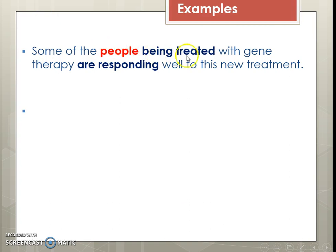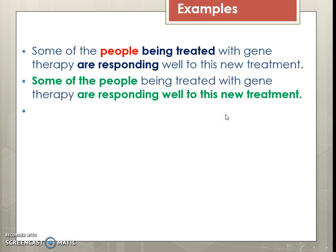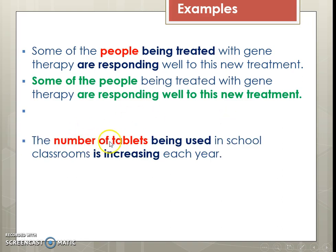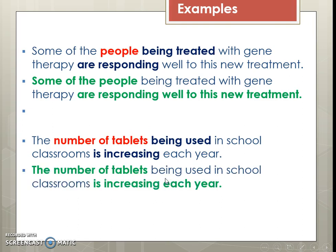'Some of the people being treated with gene therapy are responding well to this new treatment.' First we find the main clause: 'some of the people are responding well to this new treatment.' What more do we know about the people? These are the people who are being treated with gene therapy. Similarly: 'the number of tablets being used in school classrooms is increasing each year.' The main idea is the number of tablets is increasing each year — and the tablets are the ones that are being used in the school classrooms.